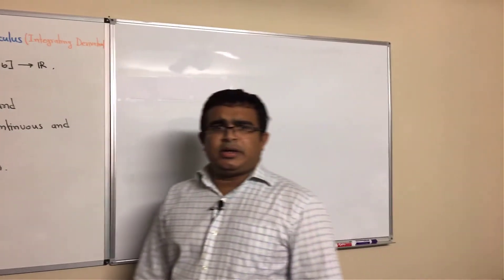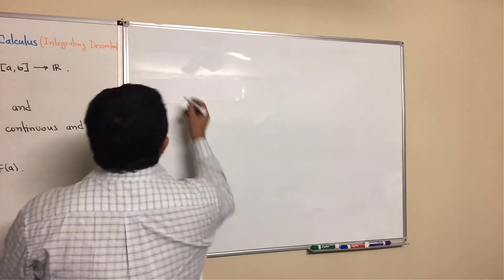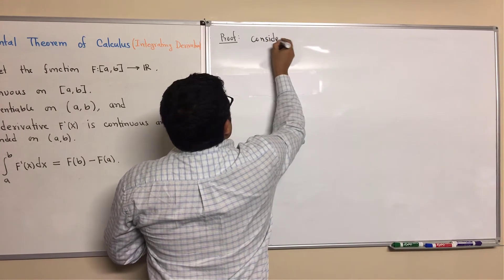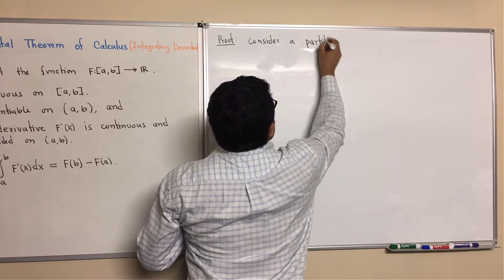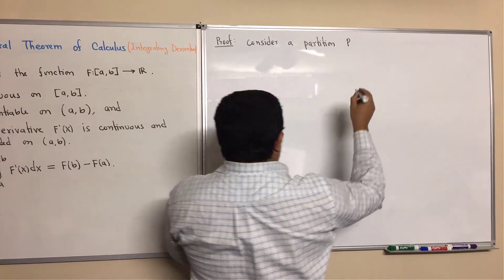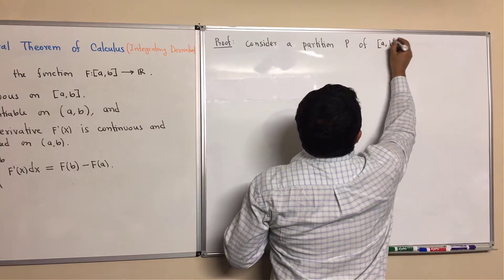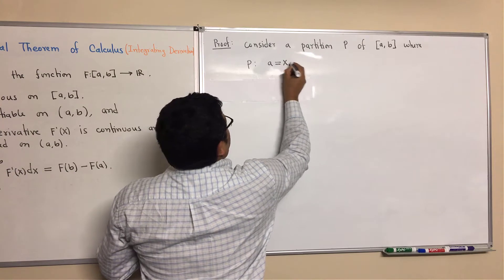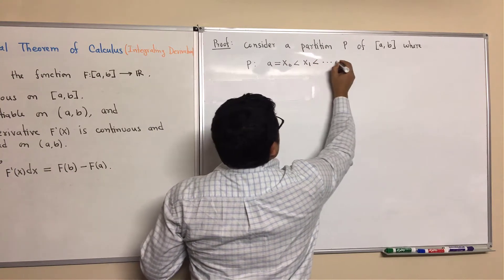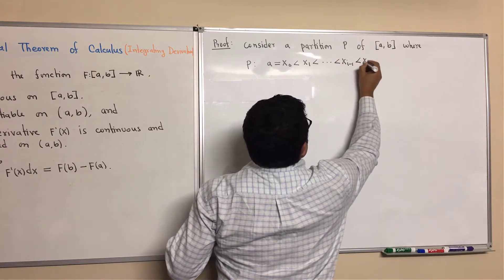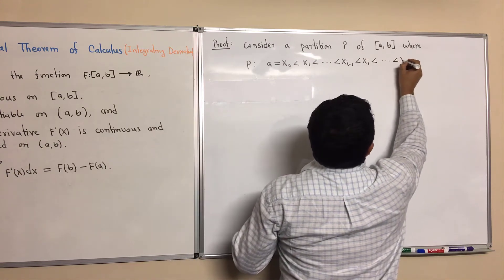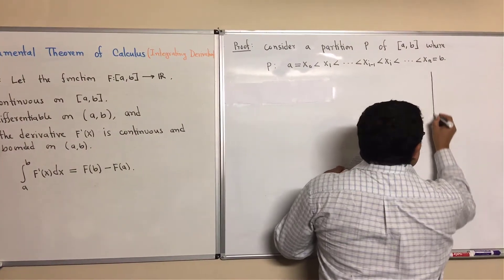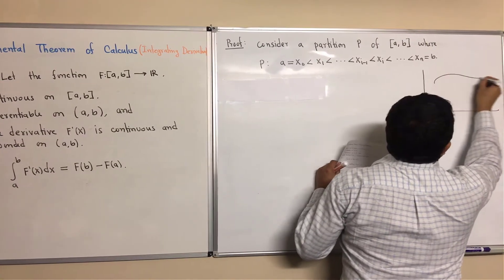Now we will learn its proof. To prove this, we will consider a partition P of [a, b], where P is: a equals x0 less than x1 less than ... less than x(i-1) less than xi, continuing up to xn which equals b. Graphically, you can think of this as the graph of F prime of x.